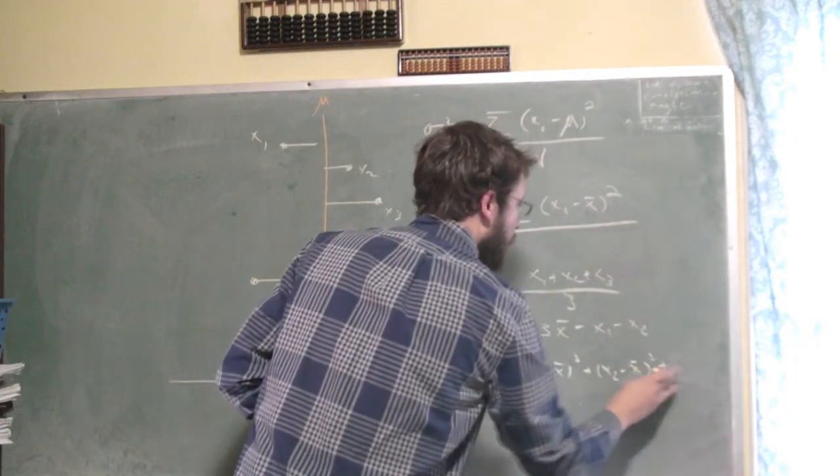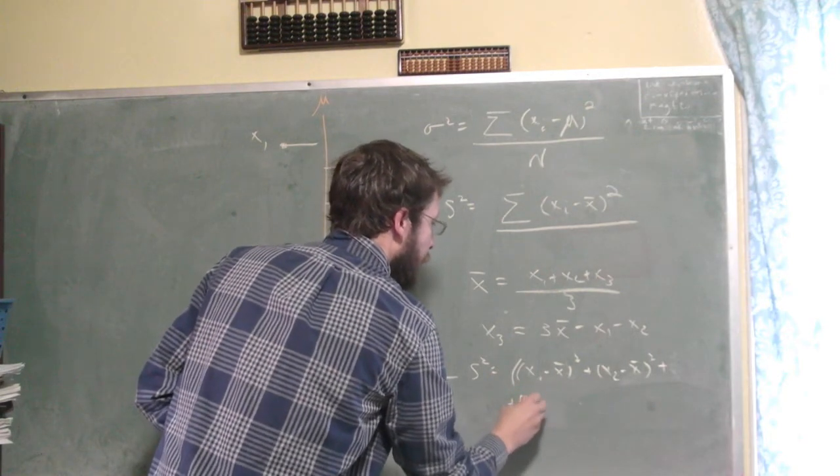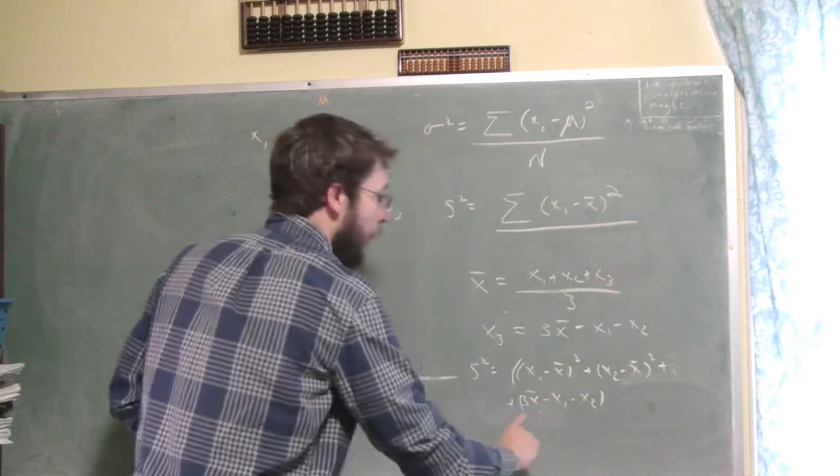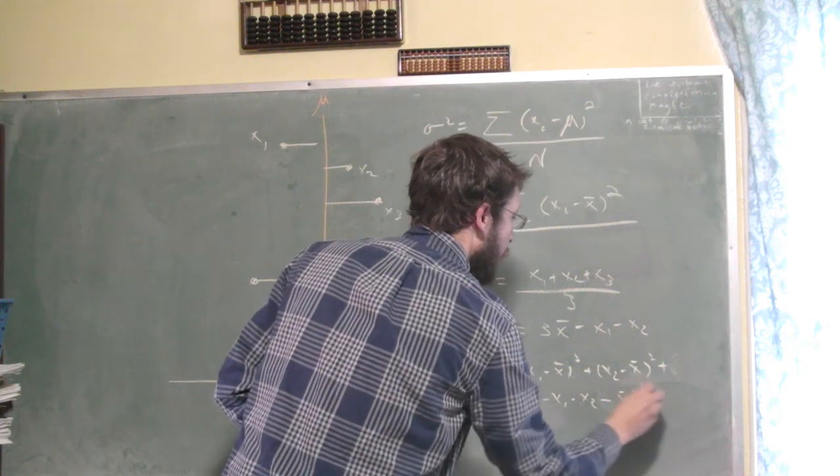But what is x3? I'm going to continue down here. x3 is 3x-bar minus x1 minus x2. So there's our x3 minus the mean squared.